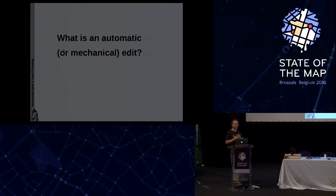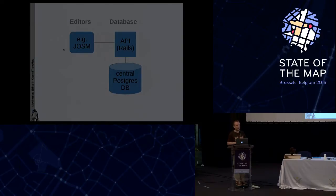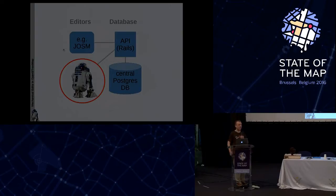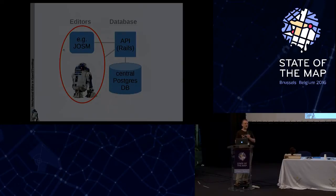What is an automatic or mechanical edit? Most people think when I say automatic edit, we have this system with our central database accessed through an API, and normally you have an editor like JOSM or the iD editor with a human being sitting in front of it. People tend to think automated editing means a bot, a robot, a script — a program that changes something in the API. That's why we've started using the term mechanical edits instead of automated edits, because you can do such mechanical edits even with editor software, even as a human being.